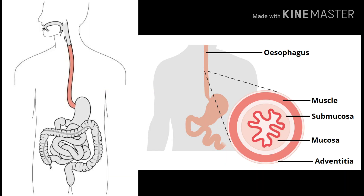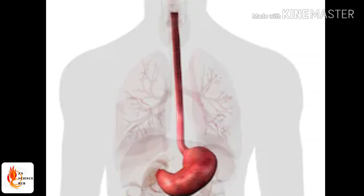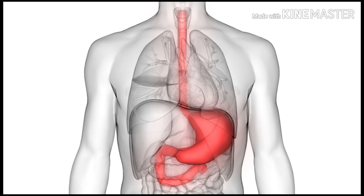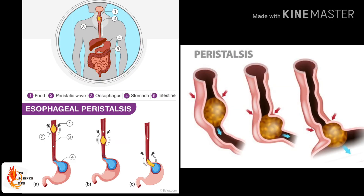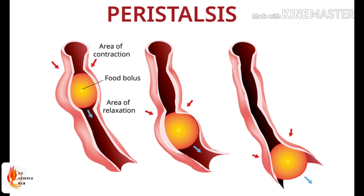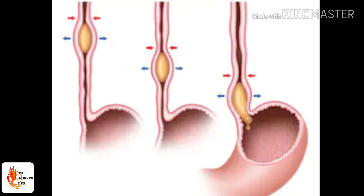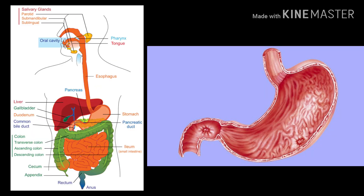The food bolus then enters the esophagus, a tube-like structure connecting the buccal cavity to the stomach. No digestion takes place inside the esophagus. The food moves along this tube due to peristaltic movement. The esophagus is a muscular structure; due to contraction and relaxation of its walls, peristaltic movement appears as a wave — it is a rhythmic contraction and relaxation of the esophageal wall.